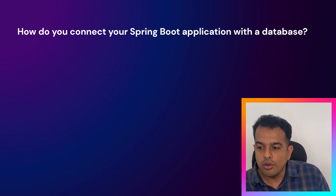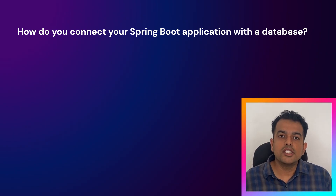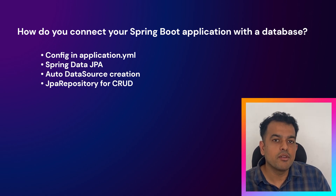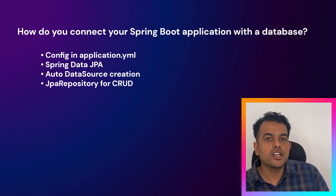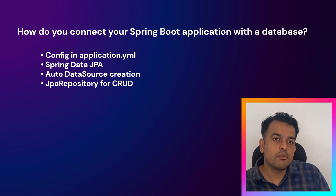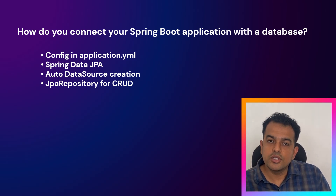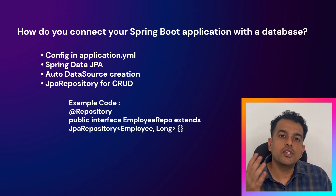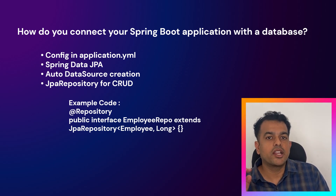Finally, there was a database-related question: how do you connect your Spring Boot application with a database? You can answer by saying you define database connection properties — like URL, username, and password — in the application.yaml file. Then you use Spring Data JPA to interact with the database. Spring Boot automatically creates the data source and entity manager. You just create a repository extending JpaRepository, CrudRepository, or MongoRepository, and it handles all CRUD operations automatically.